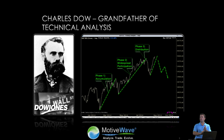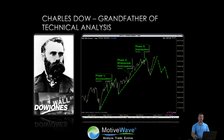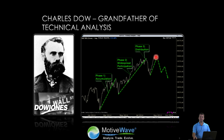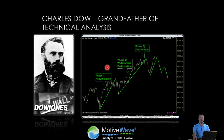The three phases are: accumulation as a move is getting started, widespread participation as more people get involved in the move, and distribution as markets start to take profits and people start to exit the position. From there we reset, and the market sets up for another three-phase trend to the upside. So again, we have accumulation, widespread participation, and then distribution over here. Then we reset with a correction, and the three-step process begins again.